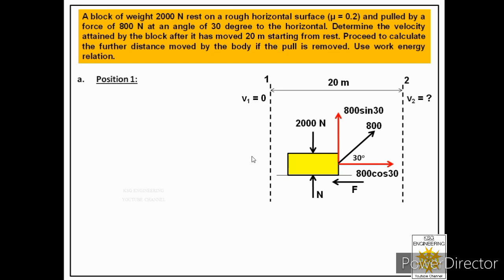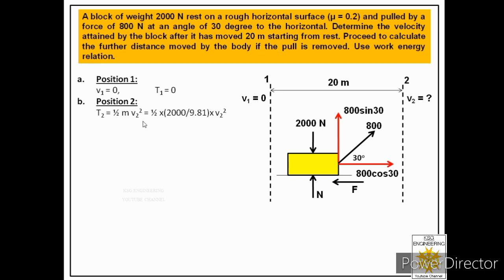At position 1, the kinetic energy of the block is zero because the initial velocity is zero. At position 2, the final kinetic energy T2 equals half m v2 squared. Since we are given the weight rather than the mass, we divide by 9.81: T2 equals (2000 / 9.81) times v2 squared divided by 2, giving T2 equal to 101.93 v2 squared.